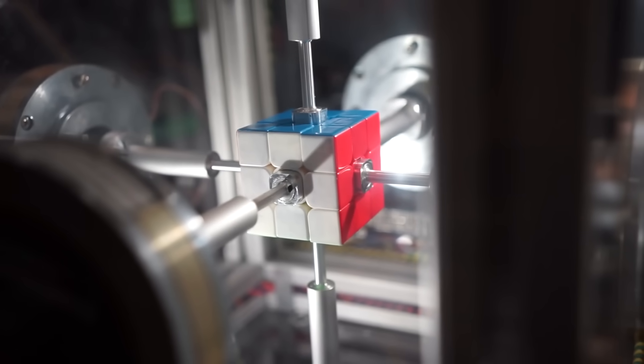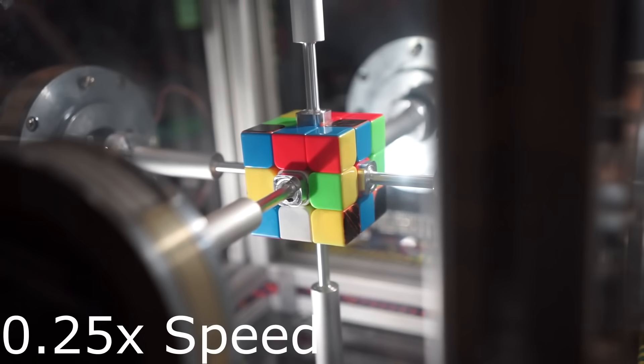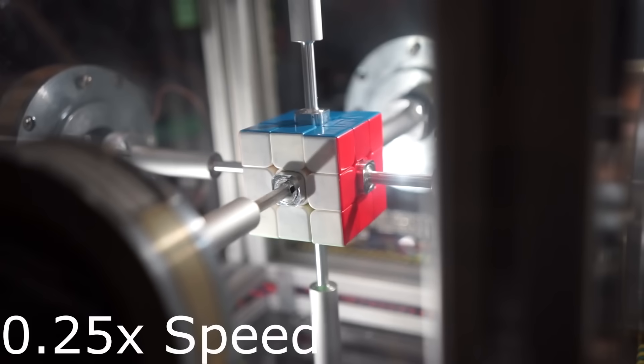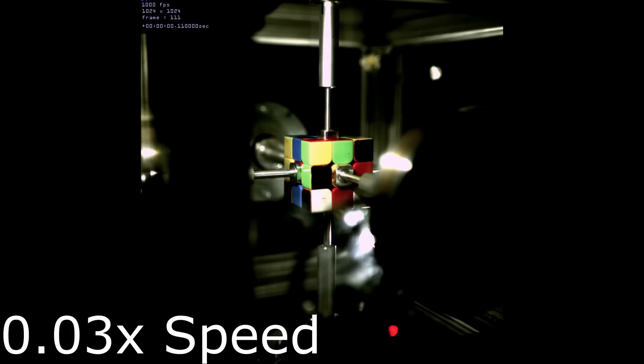Currently, Rubik's Contraption is the fastest robot to solve Rubik's Cube. Developed by MIT graduates Ben Katz and Jared DiCarlo, the robot solved the Rubik's Cube in just 0.38 seconds in 2018.